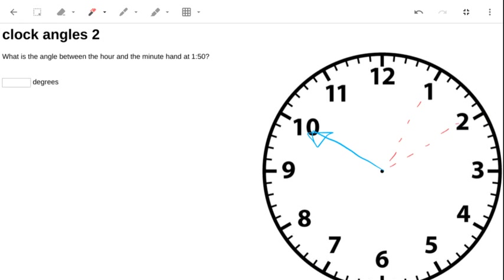As it stands, it's 1:50, which is 1 and 5/6ths. So it's 5/6ths through that hour there.